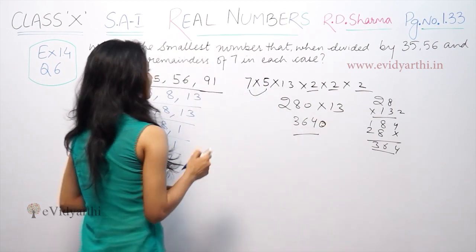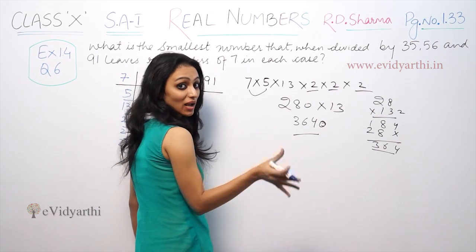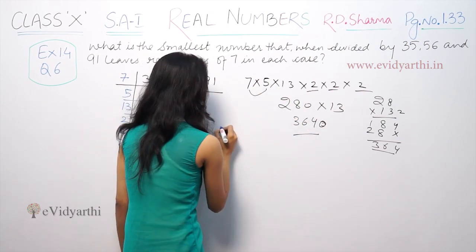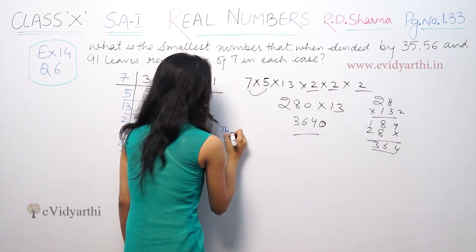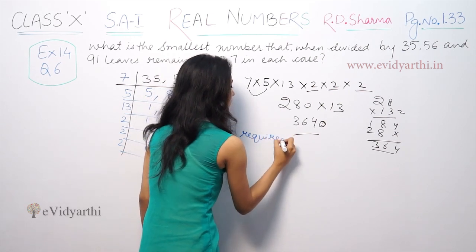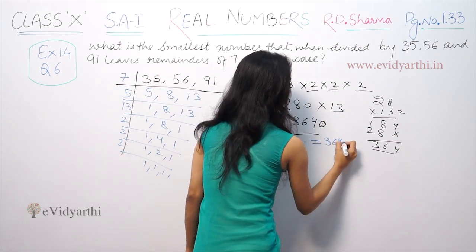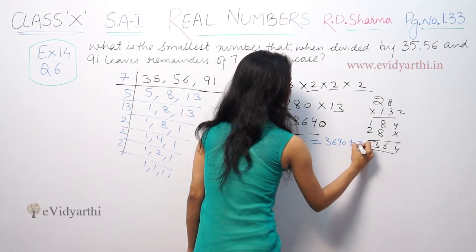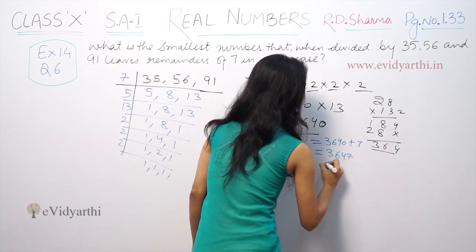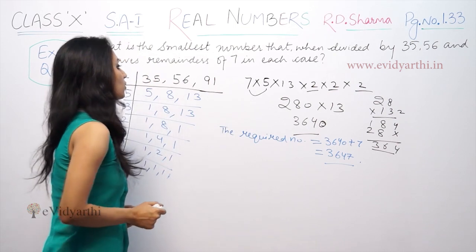Now, a remainder of 7 is still left. That means we need to add the remainder to the LCM so that it will be completely divisible. So the required number is 3640 + 7 = 3647. So 3647 is the required number.